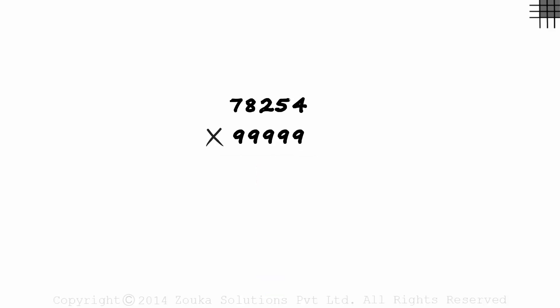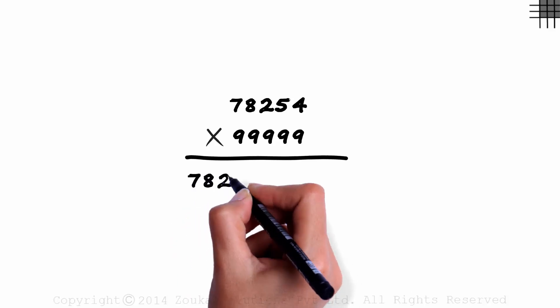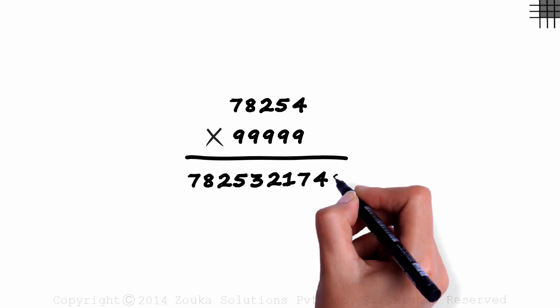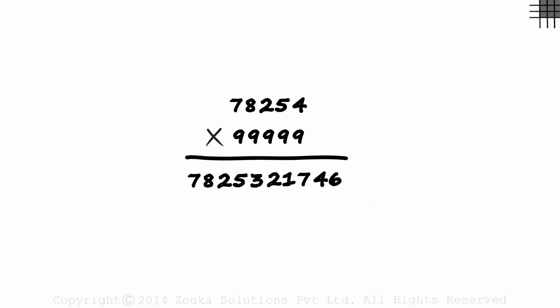There's no chance you could have done it in five seconds if you use the traditional method. Let's see how much time I take. Seven-eight-two-five-three-two-one-seven-four-six. Yes, that's the correct answer and you may verify it using your calculator.